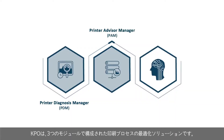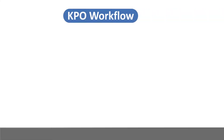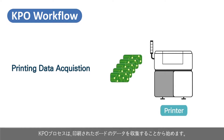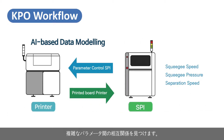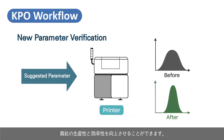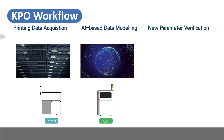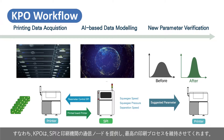KPO is a comprehensive process optimization solution comprised of three interlinking modules, each integrated into KBOX. The first step is to collect production yield data from printed boards. KPO captures these printing results in real time and uses an AI-based algorithm to find the complex relationship between key printer parameters and printing quality. KPO recommends ideal operating parameters to maximize yield and production efficiency, and facilitates communication between the SPI and printer to ensure the ideal printing process is maintained during operation.